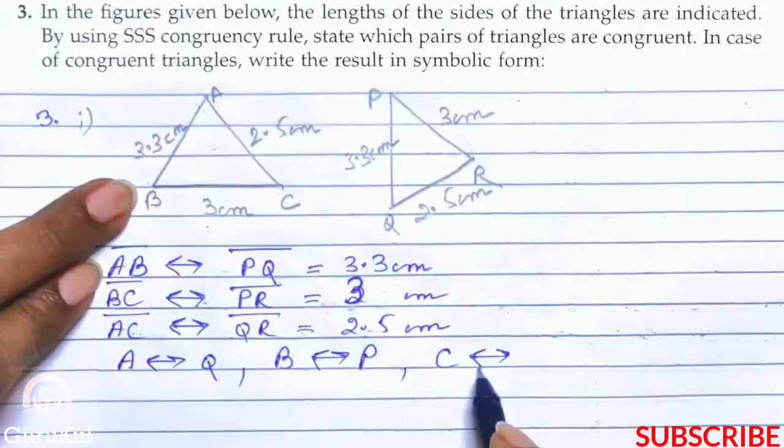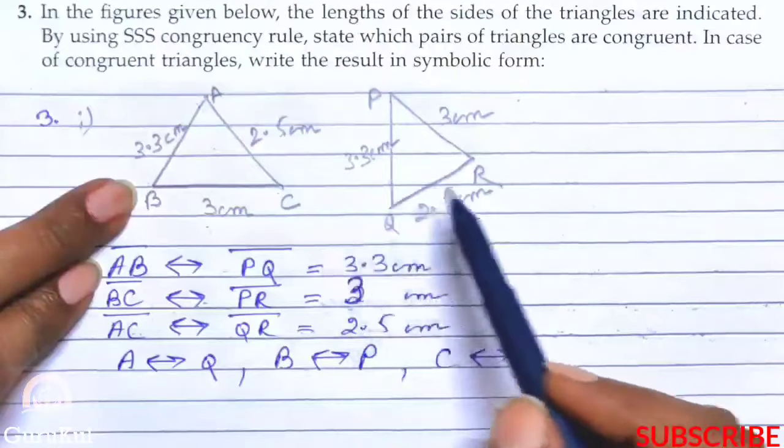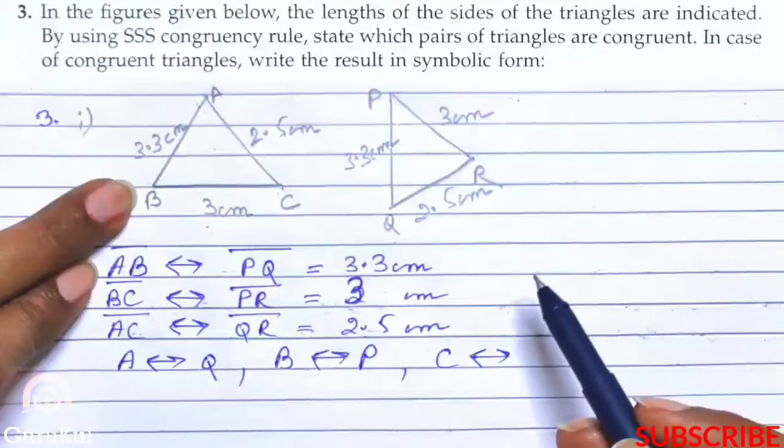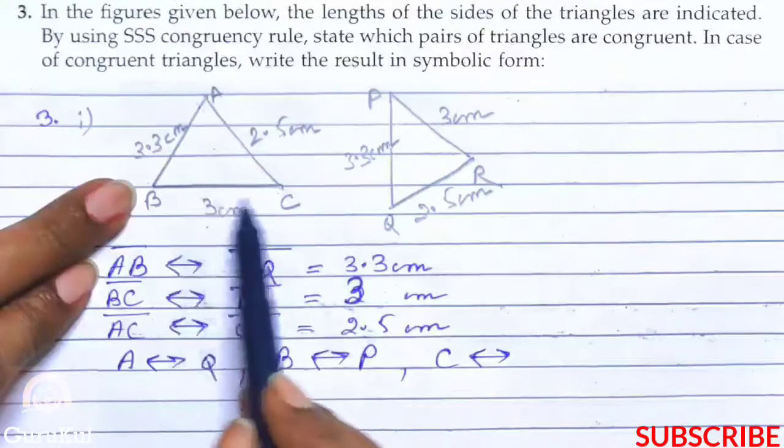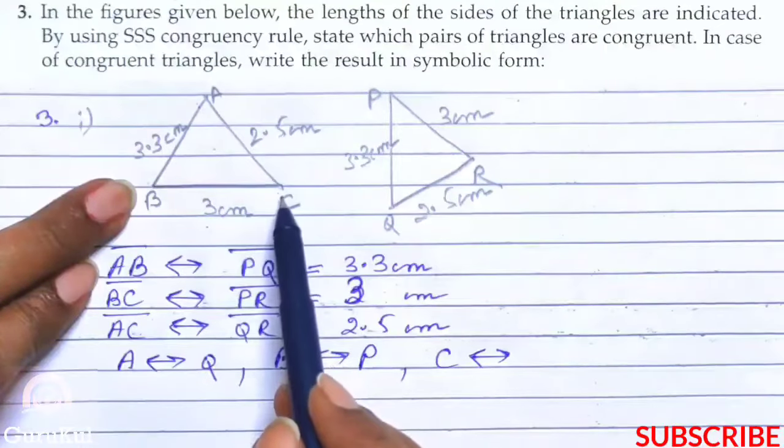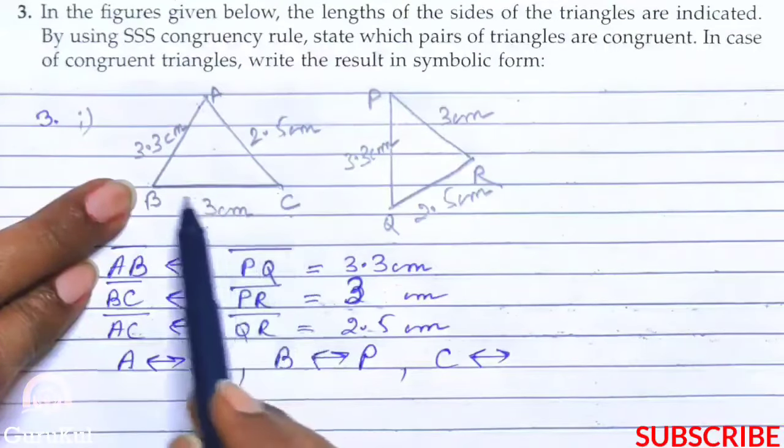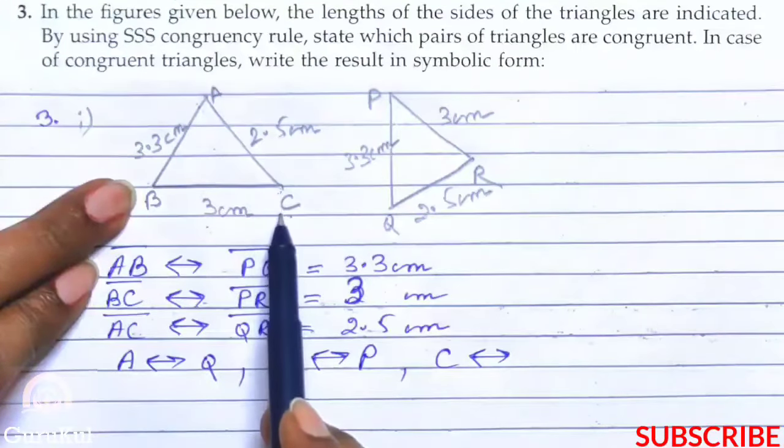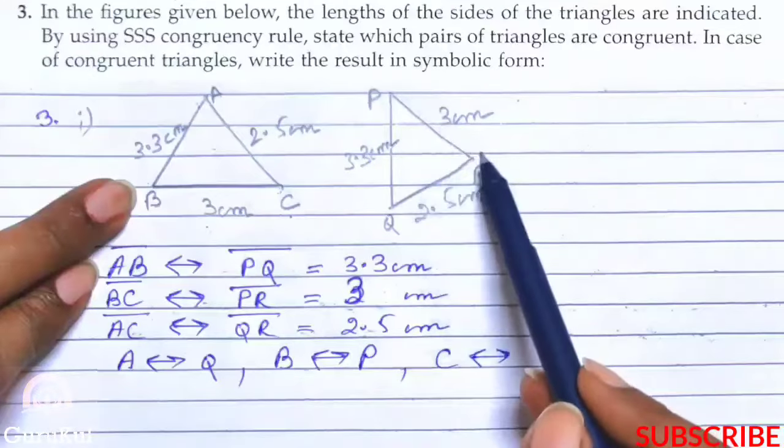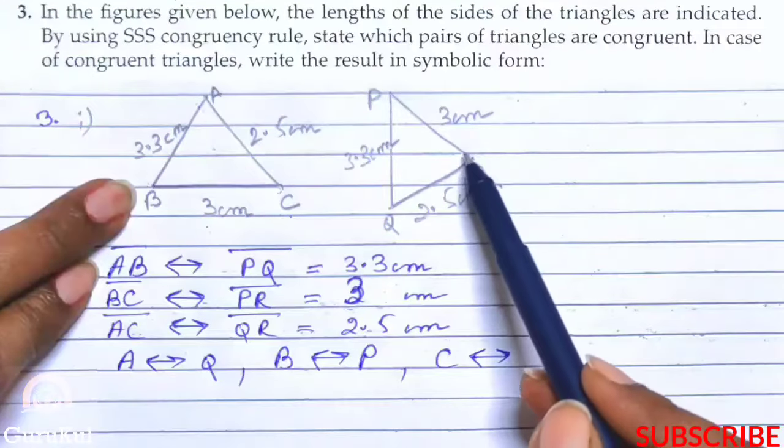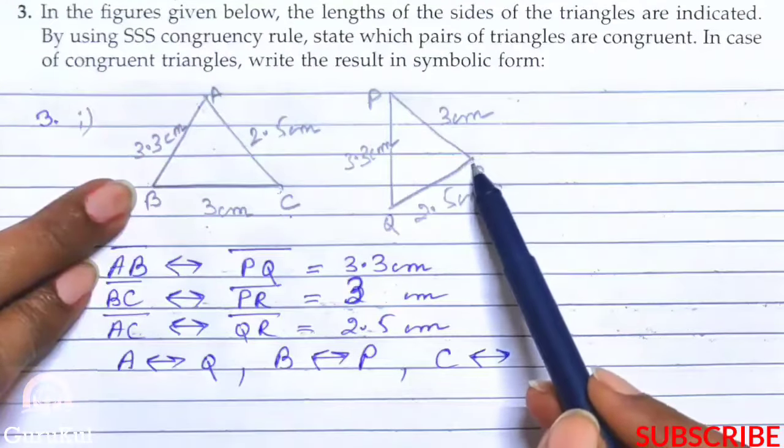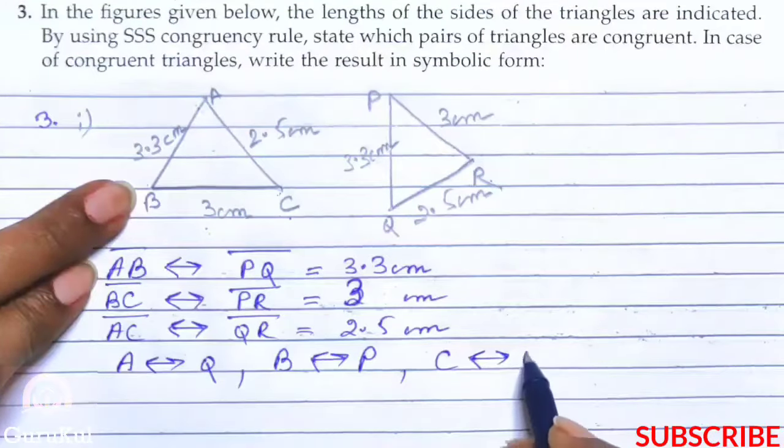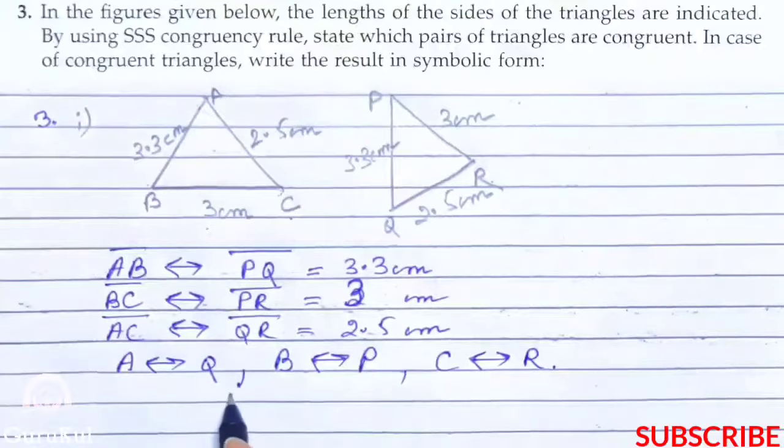Now we will talk about C. C is correspondence to which angle? Now we will tell you that we have left which is R, but we are repeating again. Which arms join the vertex C? It is 3 cm and 2.5. They are meeting at the point C. So here in the next triangle, 3 cm and 2.5 are meeting to form a vertex R. So C corresponds to R.